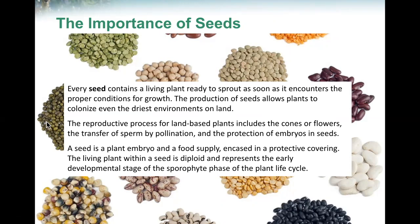The reproductive process for land-based plants includes the cones or flowers, the transfer of sperm by pollination, and the protection of embryos in seeds. A seed is a plant embryo and a food supply encased in a protective coating.